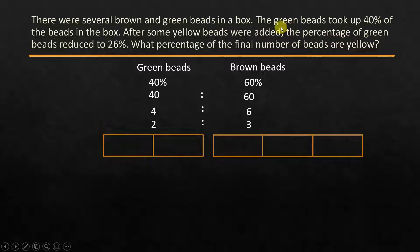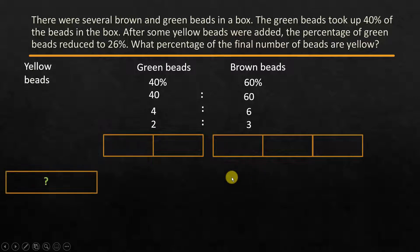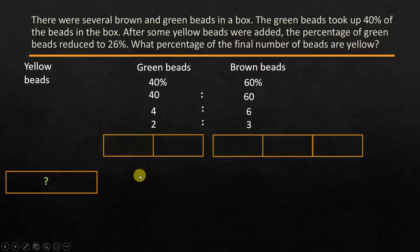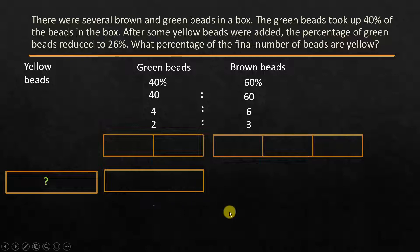Now some yellow beads are added. Let's say there are some yellow beads that are added — we don't know what is the quantity of the beads or how it is related to these two. Two is to three is the relation in ratio. So now, this is 40%, which is represented by two units. In the new setup, let's assume there are some green beads here, and this is 26% — it becomes 26%.